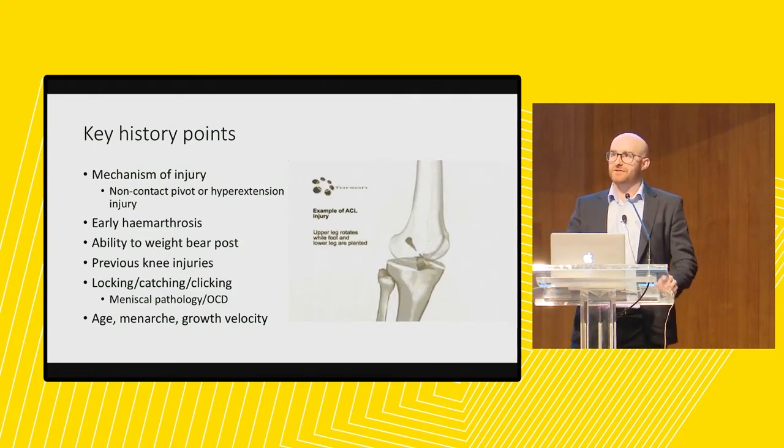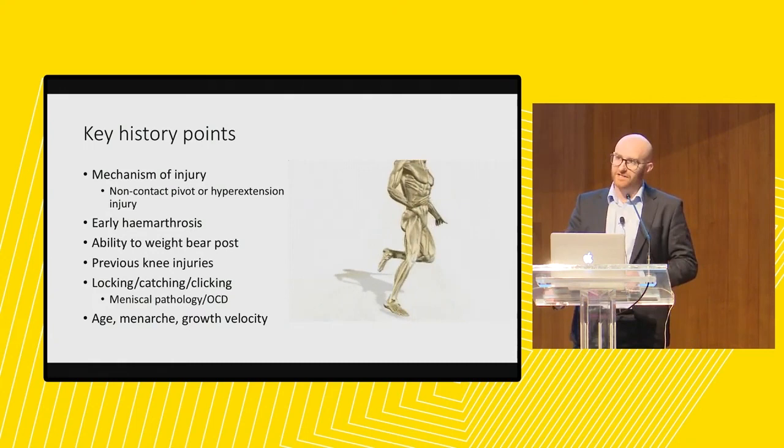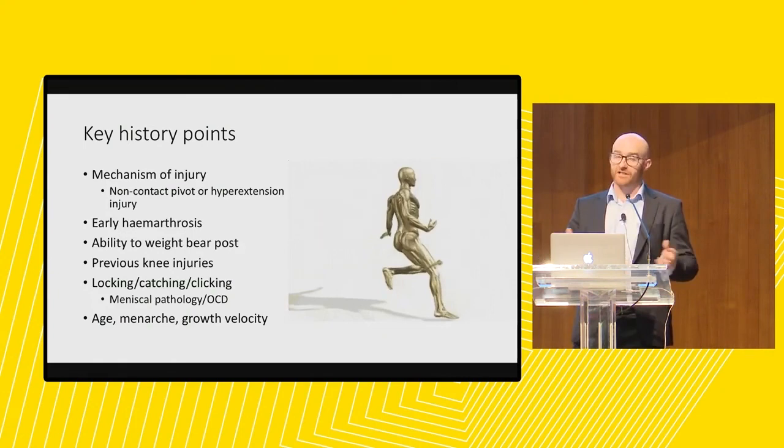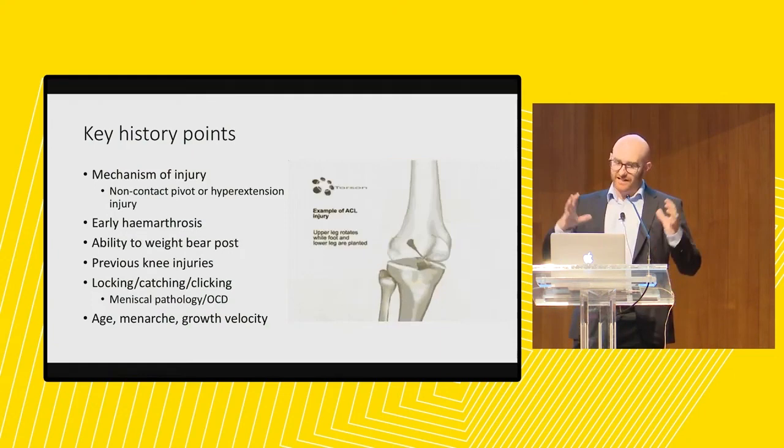In terms of history, the key points are the mechanism of injury. They're non-contact pivoting injuries, classically in kids, same as adults. But in children, hyperextension injuries of the knee — particularly with their foot on something and a friend or sibling jumping on their knee — is a really common cause of paediatric ACL injuries, whereas in adults you'd classically get a PCL injury with that.